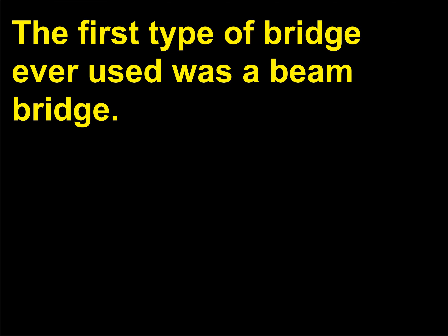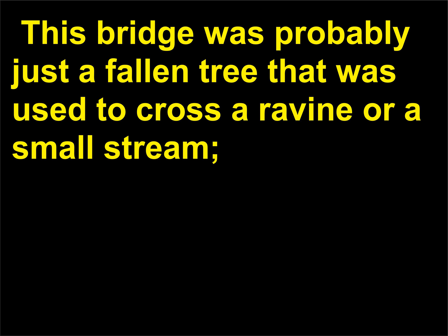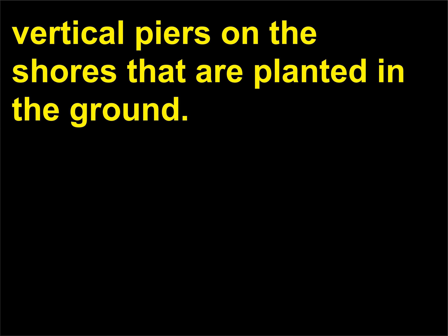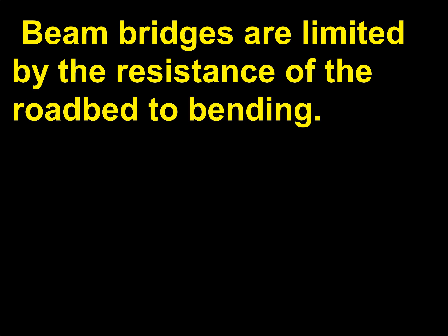The first type of bridge ever used was a beam bridge. This bridge was probably just a fallen tree used to cross a ravine or a small stream, supported by the river bed or by a group of rocks. Beam bridges consist of a horizontal roadbed supported by vertical piers on the shores that are planted in the ground. Beam bridges are limited by the resistance of the roadbed to bending.